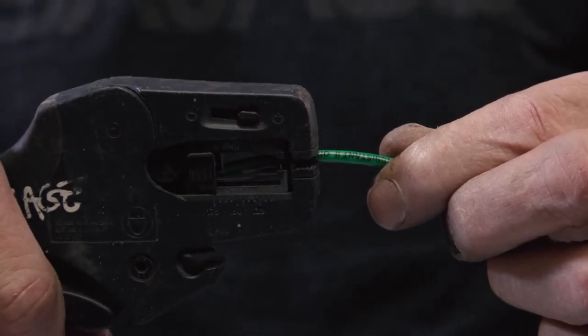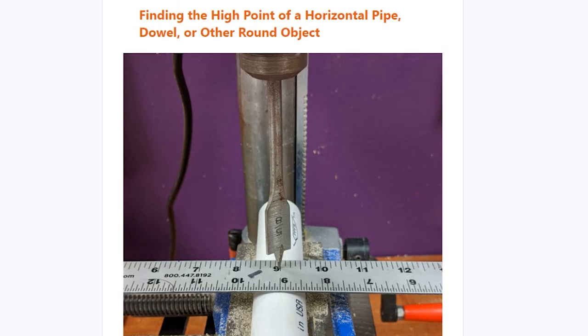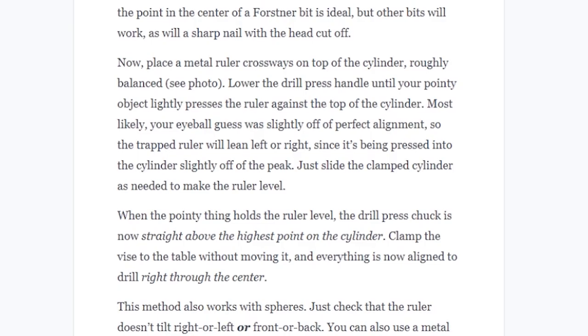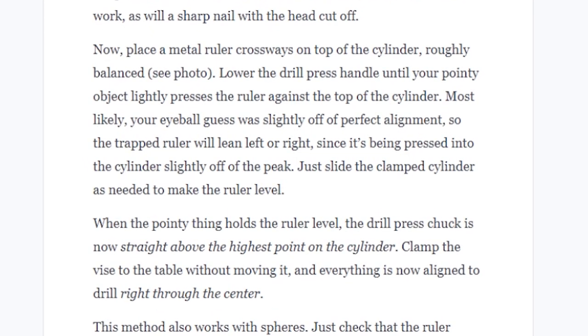Adam Savage has another Favorite Tools video out that talks about an inexpensive set of automatic wire strippers that he enjoys. And in Gareth Branwyn's Tips, Tools, and Shop Tales newsletter, he's got a great one from Emery Kimbrough on finding the highest point on a cylinder or pipe or even a sphere using a drill press, a spade bit, and a ruler. It's a neat concept I hadn't seen before.